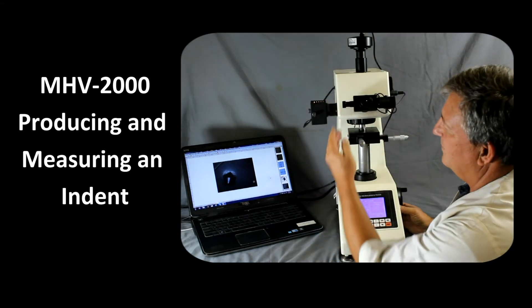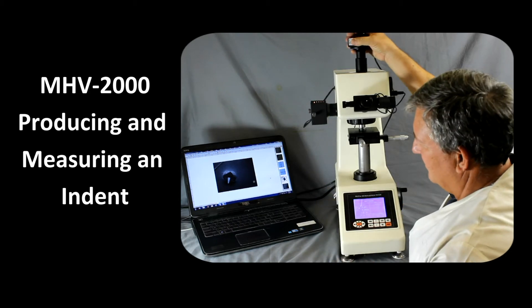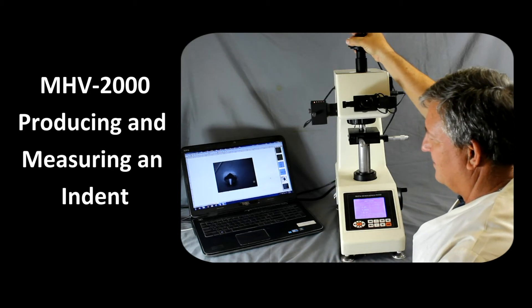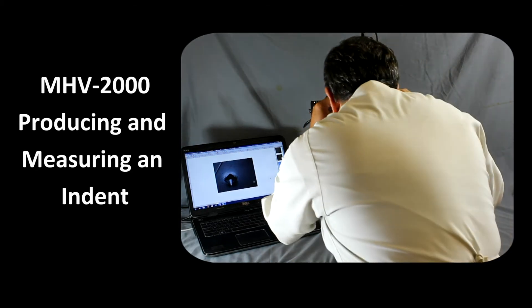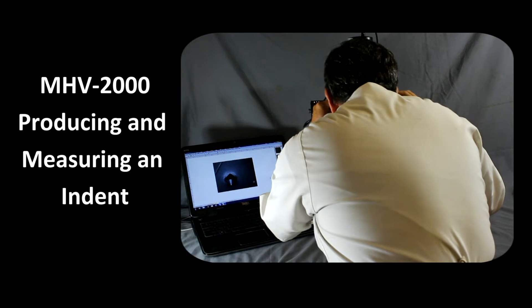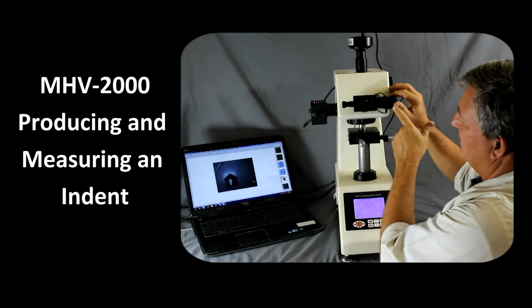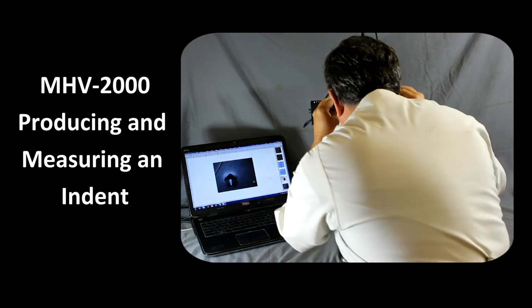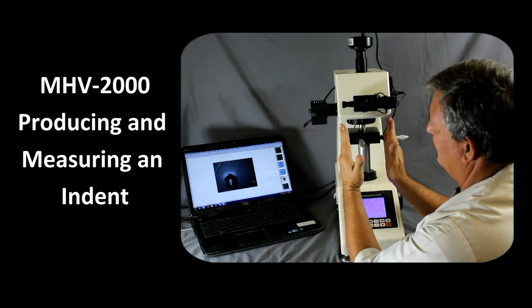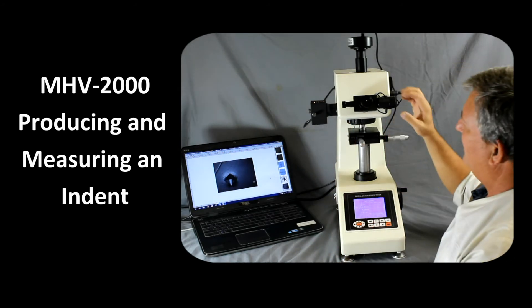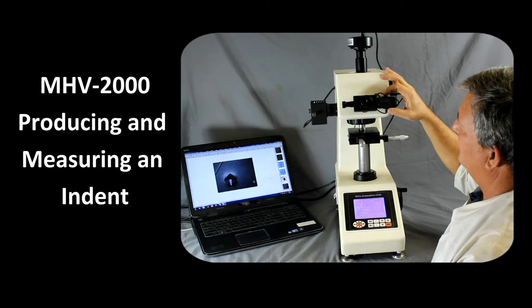And so what we want to do at this point is we want to move the left filer to the left edge of the indent. Let me go ahead and rotate that just a little bit to be coincided with the filer. And so let's go ahead and move the left filer to the left side of the indent. And then the larger right filer will move to the other side of the indent so that the indent is in between the filer. Once we have that set, we'll accept the measurement by pressing this button here. You'll hear it beep.